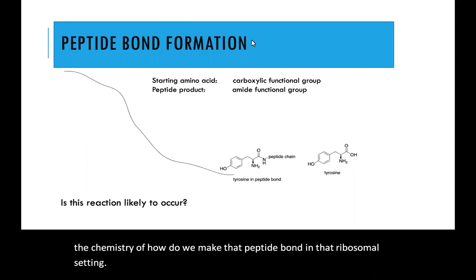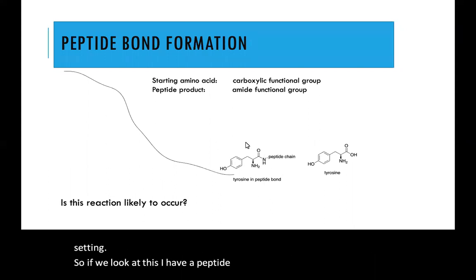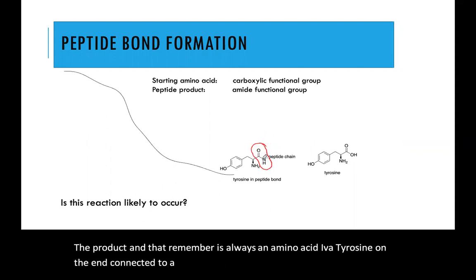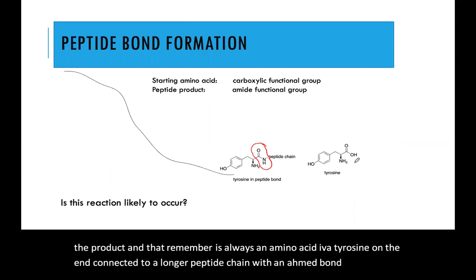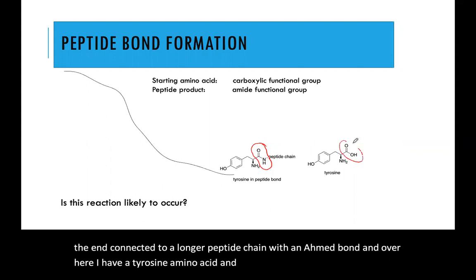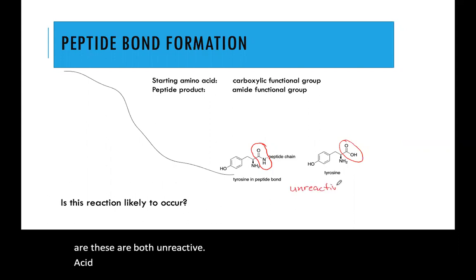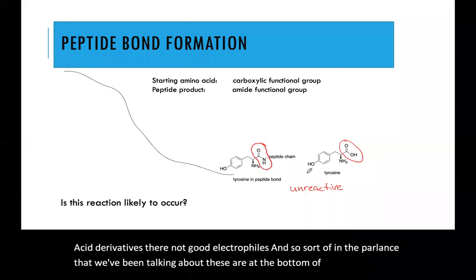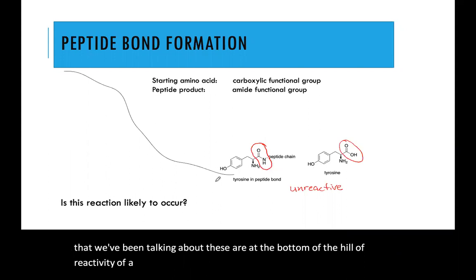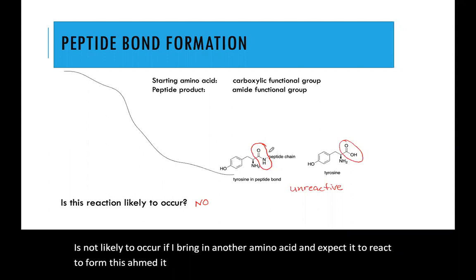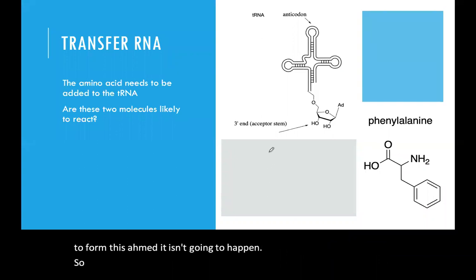Looking at this, I have a peptide chain — the product — and that is always an amino acid. I have a tyrosine on the end connected to a longer peptide chain with an amide bond. Over here I have a tyrosine amino acid, and this is a carboxylic acid function. These are both unreactive acid derivatives. They're not good electrophiles — in the parlance we've been using, these are at the bottom of the hill of reactivity of carbonyl derivatives. So this reaction is not likely to occur. If I bring in another amino acid and expect it to react to form this amide, it isn't going to happen. So we need to look at how we can get that to happen.